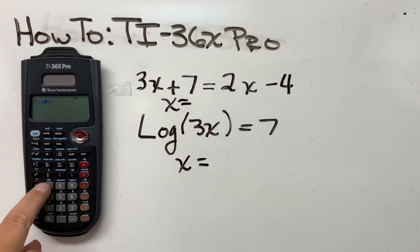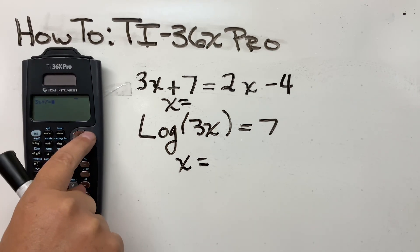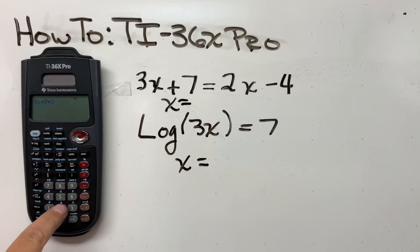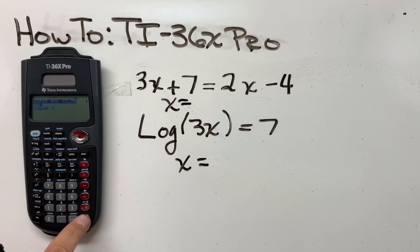Three X plus seven, arrow over gets on the other side of the equal sign. Two X minus four, and that's it. Enter, enter. And then here it says solve for X, and click enter one more time.